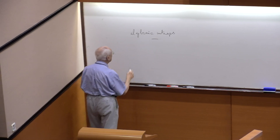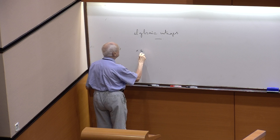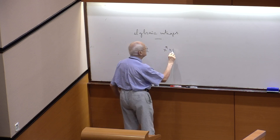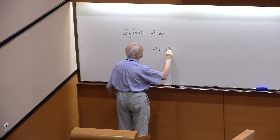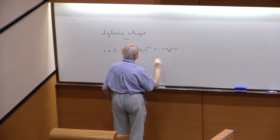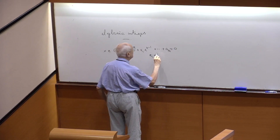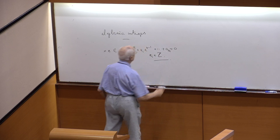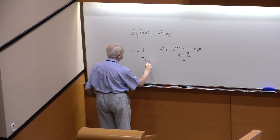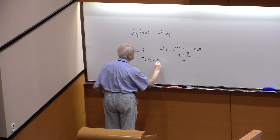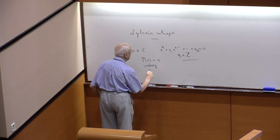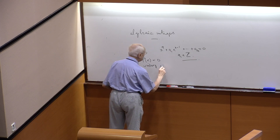Recall what is an algebraic integer: it is a number, which I will view as lying in C, which satisfies an equation of the type X^n plus A_{n-1} X^{n-1} plus ... plus A_n equals 0, where the A_i are in Z. In other words, it satisfies a monic polynomial equation P(X) = 0 with coefficients in Z.